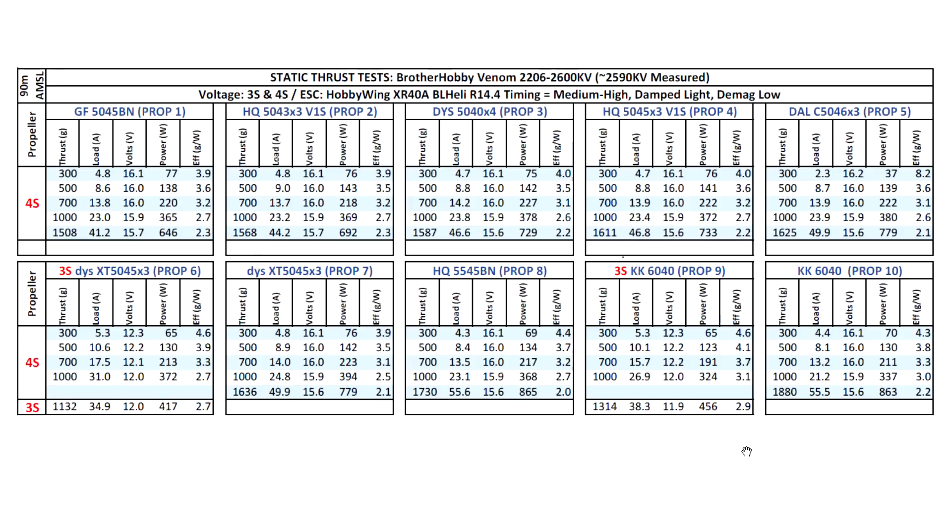Alright, so that's the thrust test results for this new motor from Brother Hobby, the Venom 2206 2600KV. Pretty good performance overall. And on top of that, the fully enclosed feature that this motor offers should be quite good for those of you that want to keep all the debris out of your motors if you fly in harsh conditions. So thanks for watching, and until the next video.